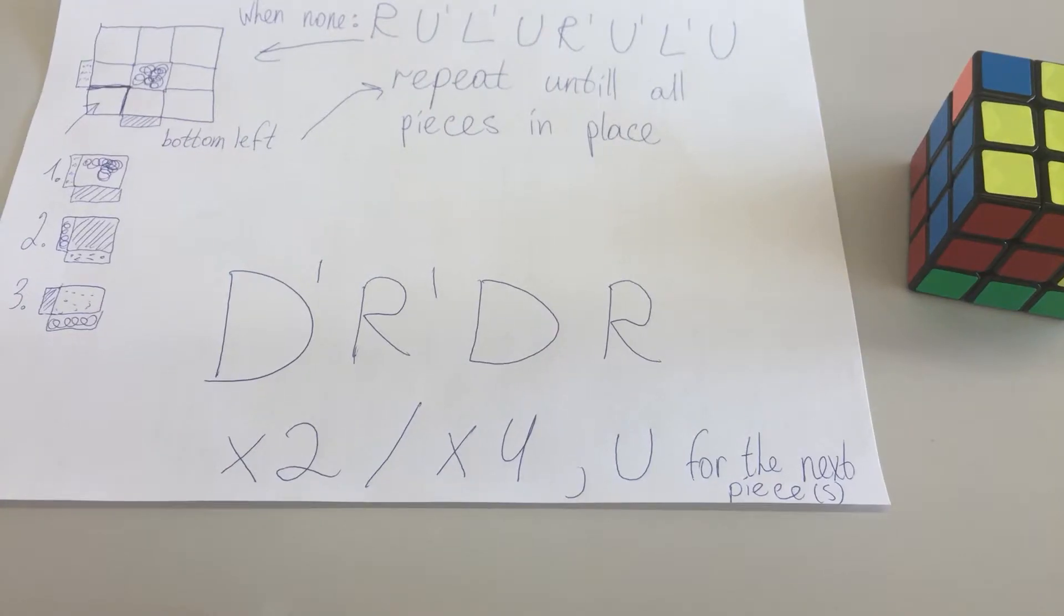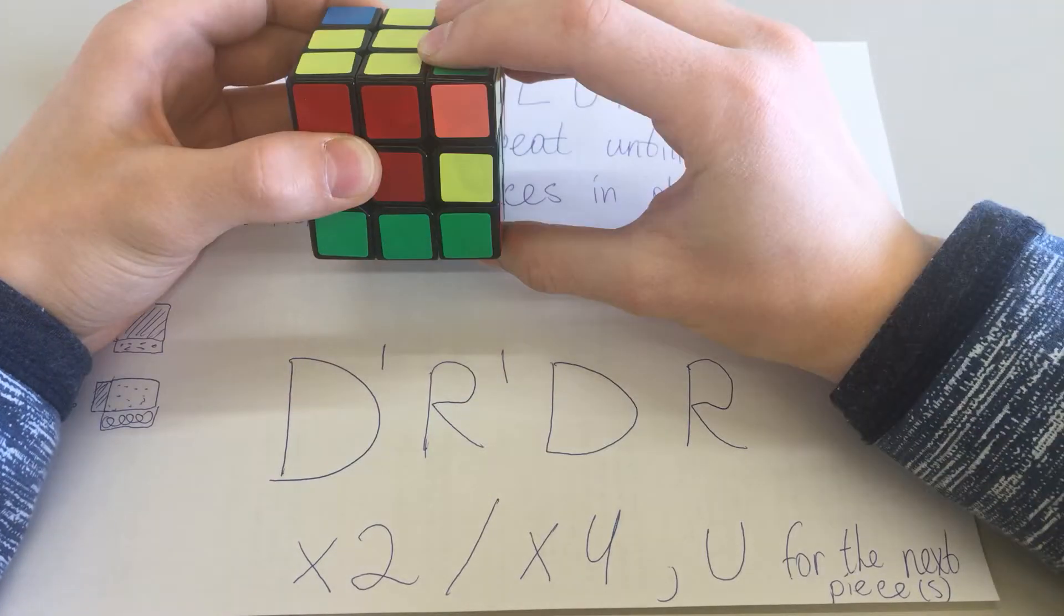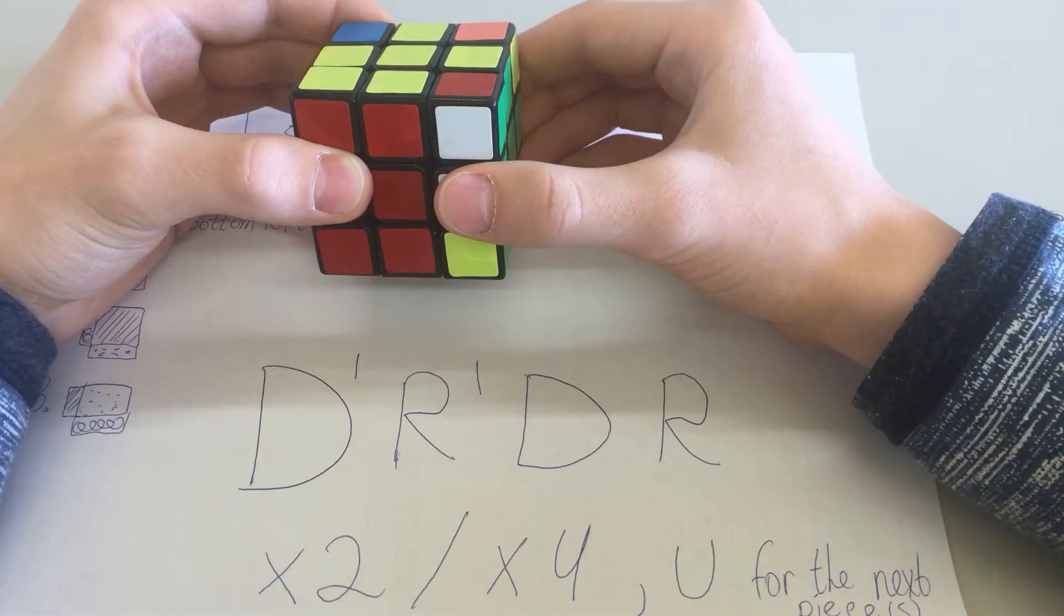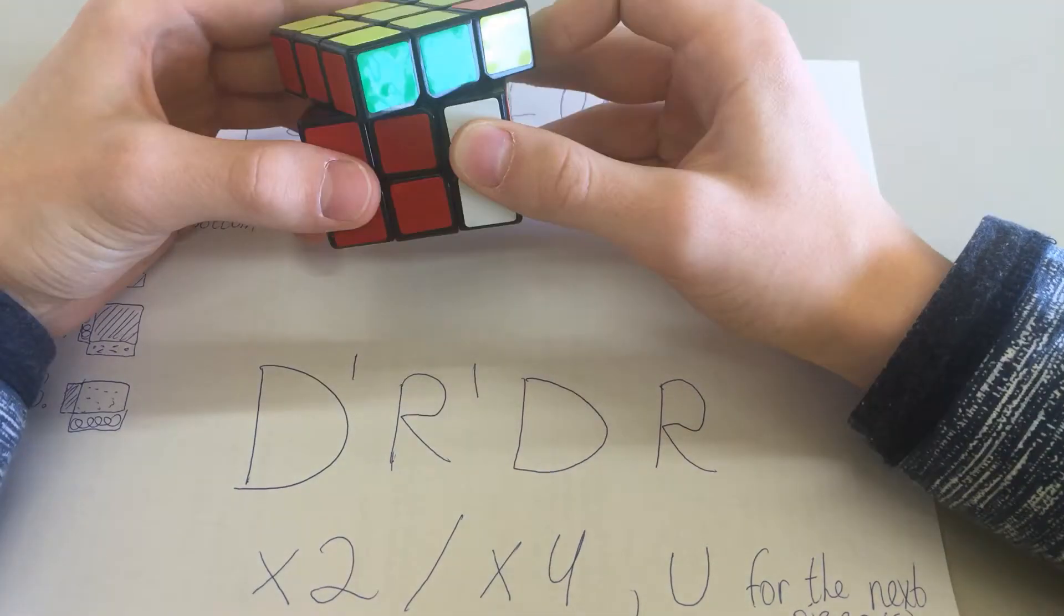And the last, but not the least, permutation. For that, you need to do another algorithm: R apostrophe D apostrophe R D twice or four times until the corner is facing yellow.